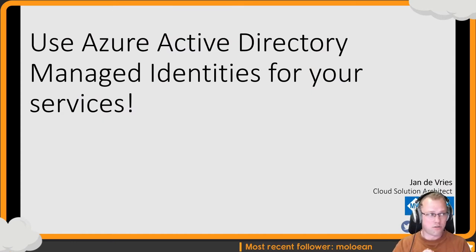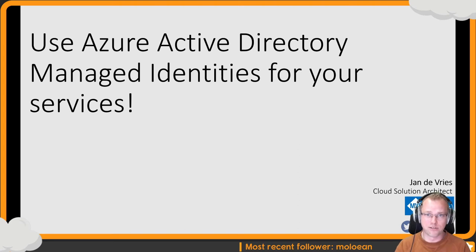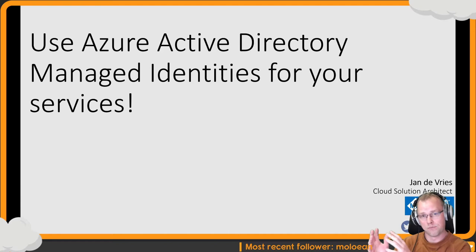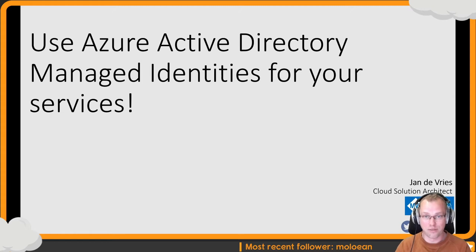For the people who don't know me — I'm Jan de Vries. I'm a cloud solution architect at a company called 4.net, based in the Netherlands. It's a small consulting firm with about 50 to 60 people, and what we do is .NET solutions. I'm focusing on Azure solutions myself — migrating from on-premises to Azure, expanding Azure architectures, or reviewing and improving what clients already have. I'm also a Microsoft MVP in the Azure space.